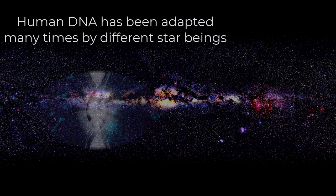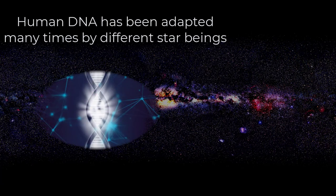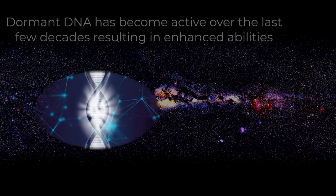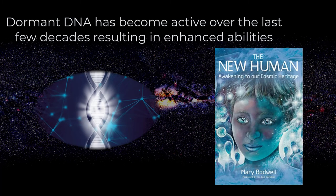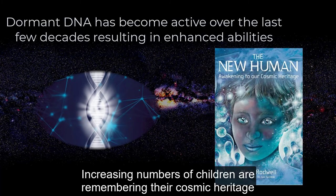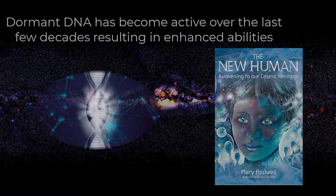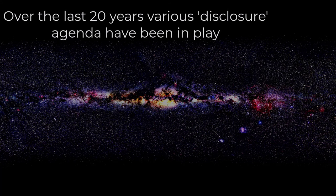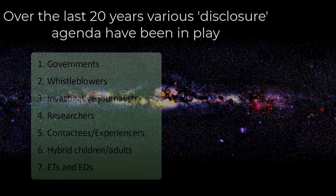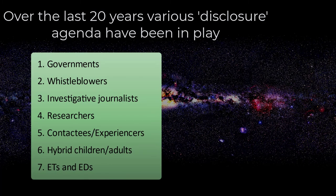Human DNA has been adapted many times by different star beings. Dormant DNA has become active over the last few decades, resulting in enhanced abilities. Increasing numbers of children are remembering their cosmic heritage. Over the last 20 years, various disclosure agendas have been in play — governments, whistleblowers, investigative journalists, researchers, contactees and experiencers, hybrid children and adults, ETs and extra-dimensionals have all had a role to play in this disclosure agenda.